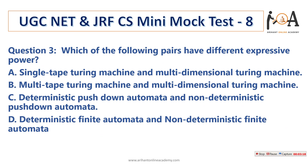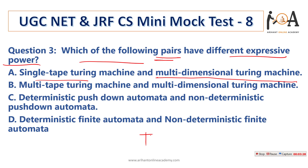Question number 3: which of the following pairs have different expressive powers? Option A: single-tape Turing machine and multidimensional Turing machine. In the definition of Turing machines, whatever type of Turing machine you have, all Turing machines have the same expressive power. So option A has same expressive power — it is false for our question. Option B: multi-tape Turing machine and multidimensional Turing machine — again, all Turing machines have the same expressive power.